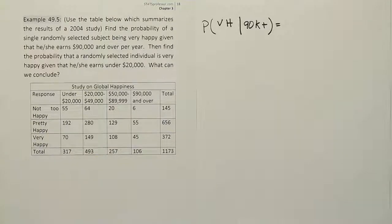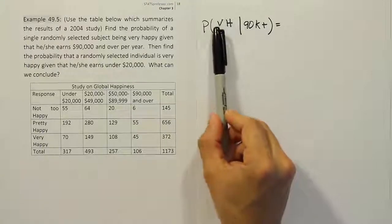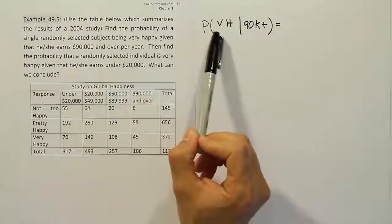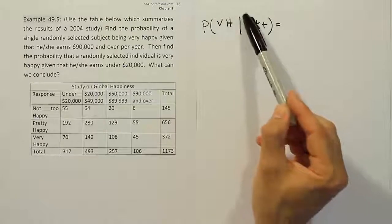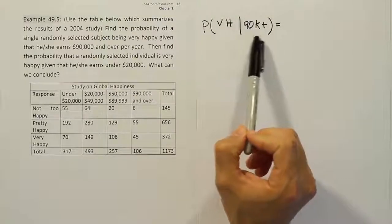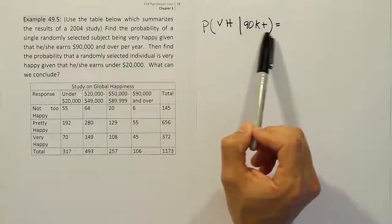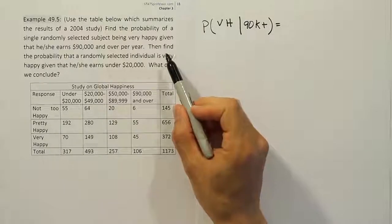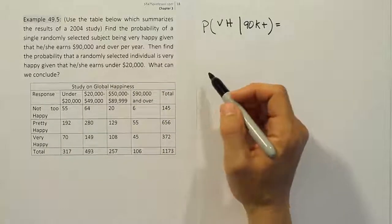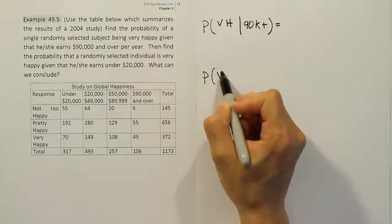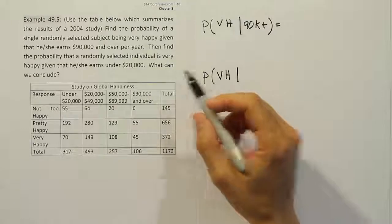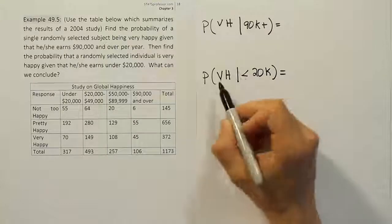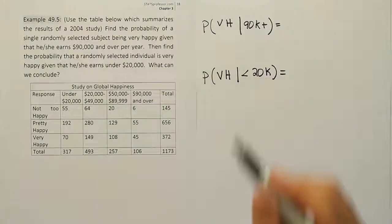I've already written out one of the statements for us for the first one. Find the probability of a single randomly selected subject being very happy - we use the straight up and down line to represent the phrase 'given that' - given that the person is in the $90,000 per year or more category. Let's do it again for the next statement. Then find the probability that a randomly selected individual is very happy given that they earn under $20,000 a year.